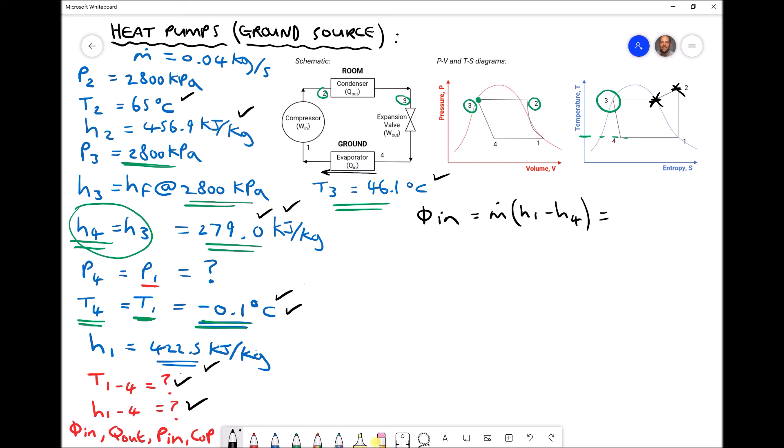Now we have values for all of these variables. We have a mass flow rate of 0.04. We have an H1 value, referring to our list on the left-hand side, of 422.5. And we have an H4 value, again referring to the left-hand side, of 279.0.